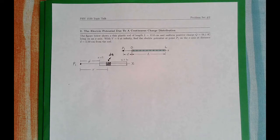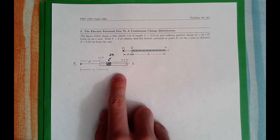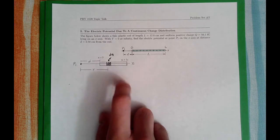The figure below shows a thin plastic rod of length L equals 12 centimeters and uniform positive charge Q equals 56.1 femtocoulombs lying on an x-axis. With V equals zero at infinity, find the electric potential at point P1 on the x-axis at distance d equals 2.50 centimeters from the rod. So this is the figure that we have here.